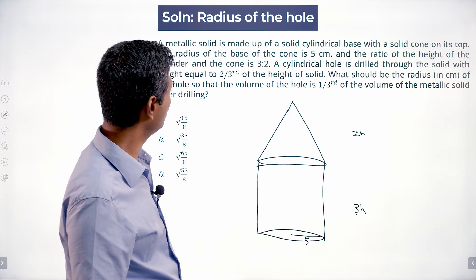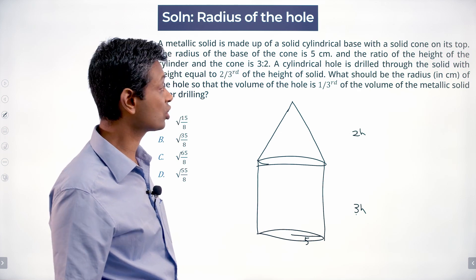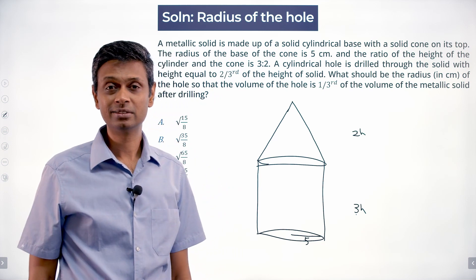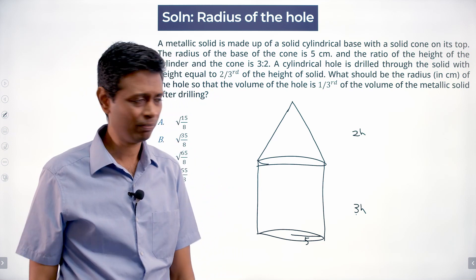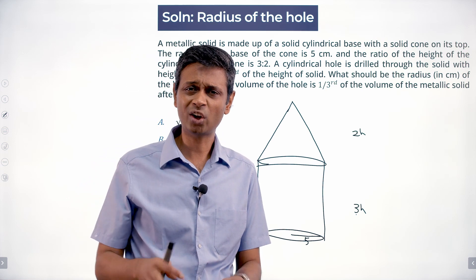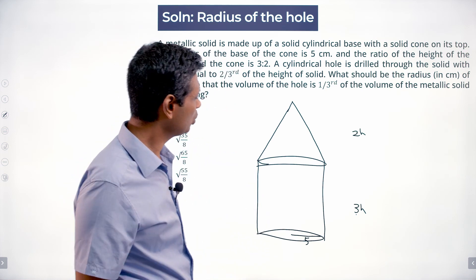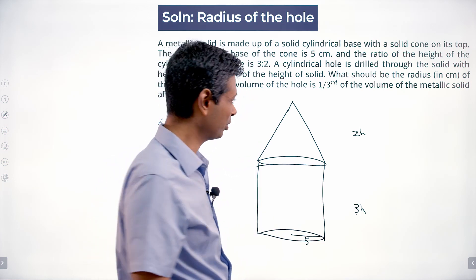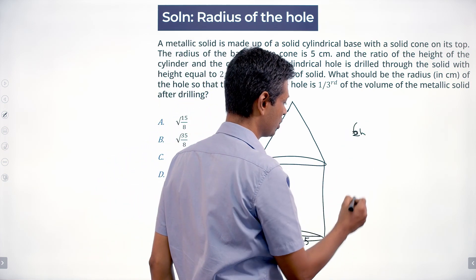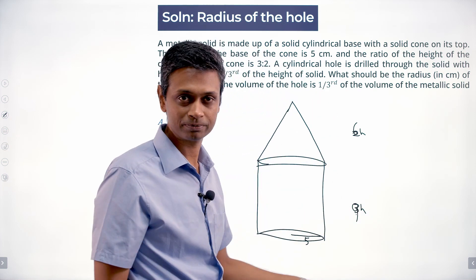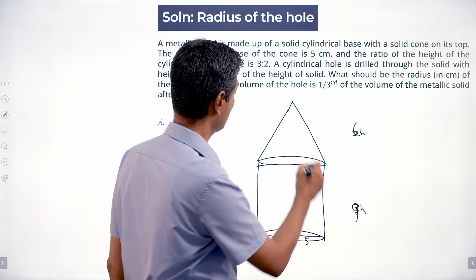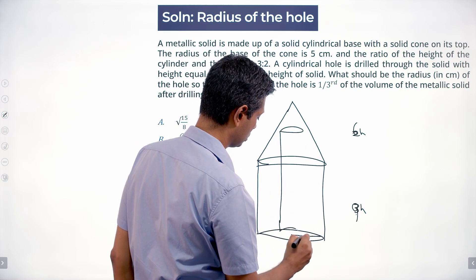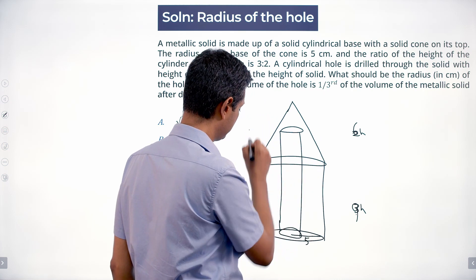A cylindrical hole is drilled through the solid with a height equal to two-thirds of the height of the solid. Two-thirds of 5h doesn't give an integer, so I want the total height to be a multiple of 3. I'll use 9h for the cylinder and 6h for the cone, giving a total of 15h. Two-thirds of 15h is 10h, so I'm drilling a hole with height 10h.